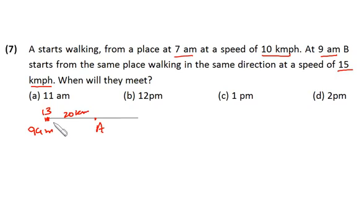Just try to understand the concept of relative speed. Since every hour, B is running 5 km extra than A. Now, B has to run 20 km extra than A to